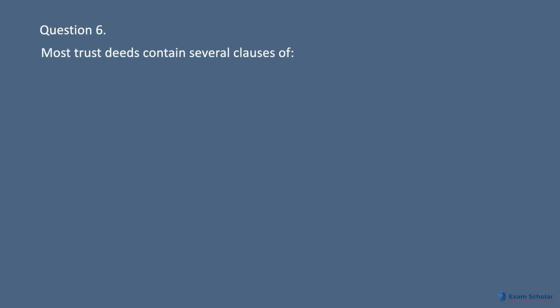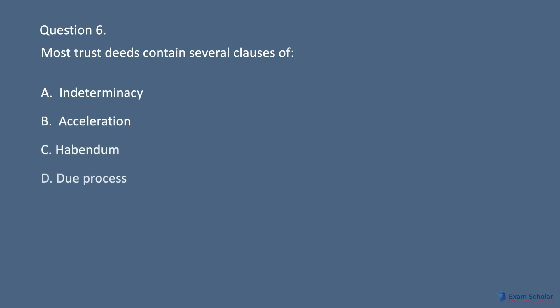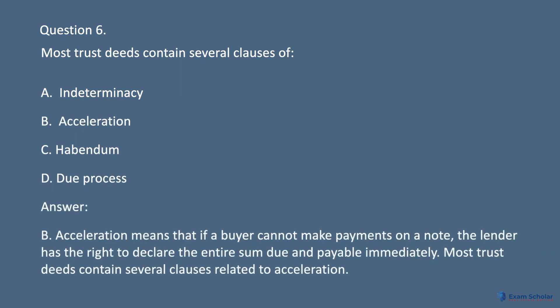Question 6. Most trust deeds contain several clauses of: A. Indeterminacy. B. Acceleration. C. Habendum. D. Due process. Answer: B. Acceleration means that if a buyer cannot make payments on a note, the lender has the right to declare the entire sum due and payable immediately. Most trust deeds contain several clauses related to acceleration.